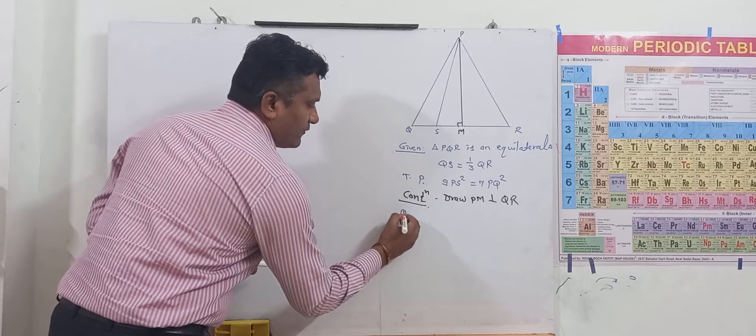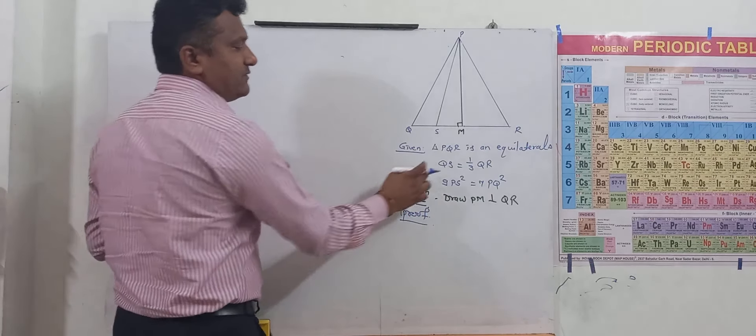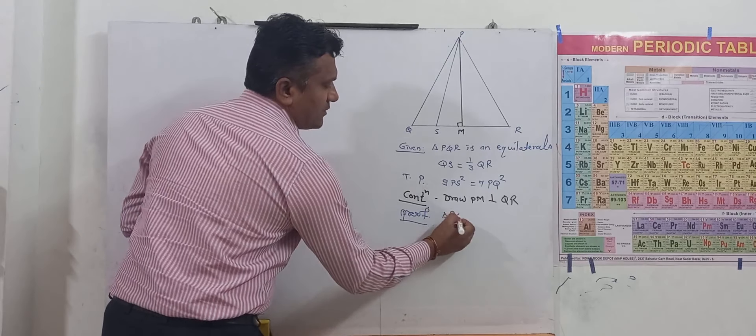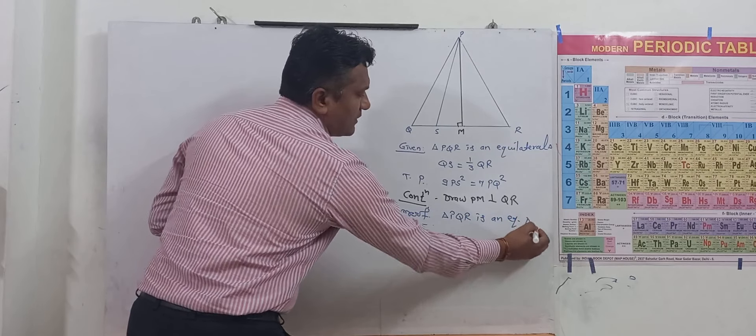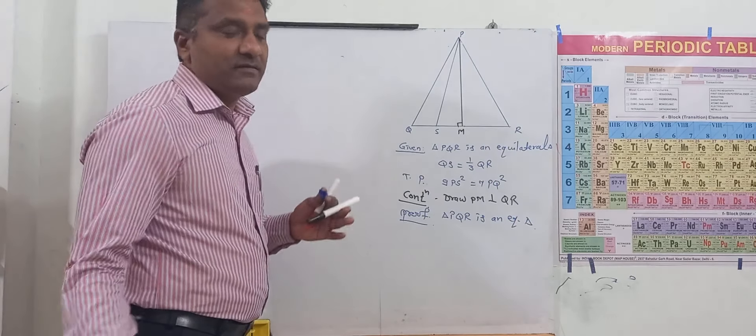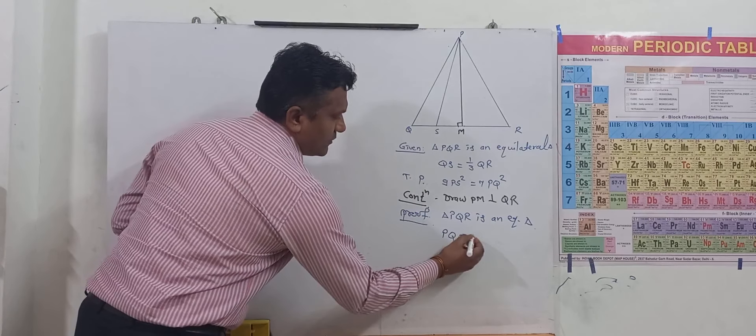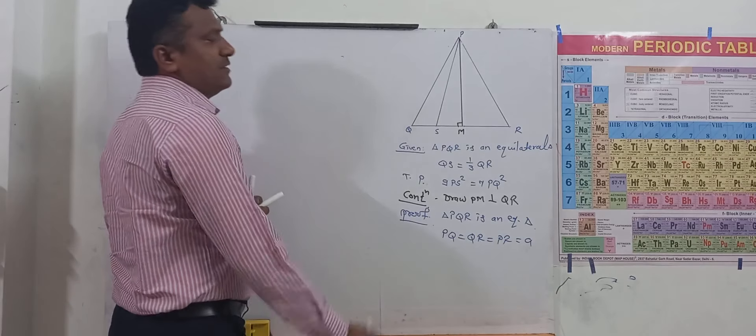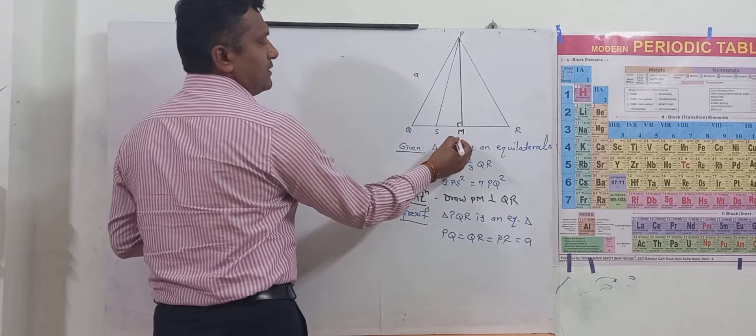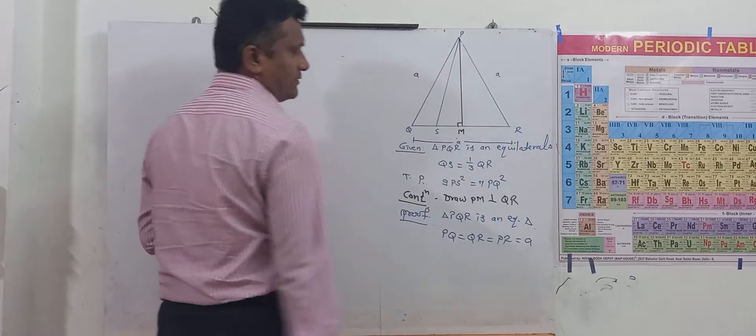Now in proof, if you watch it carefully, the first relation is given that triangle PQR is an equilateral triangle. What type of triangle is given? Equilateral. That's why all three sides, that is PQ equal to QR equal to PR. Suppose how much, A. This is also A. This total also A, and this is also A.